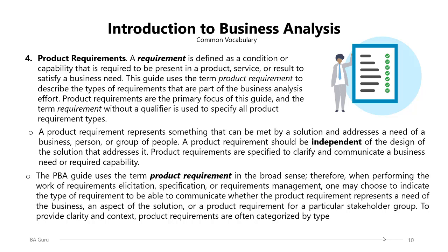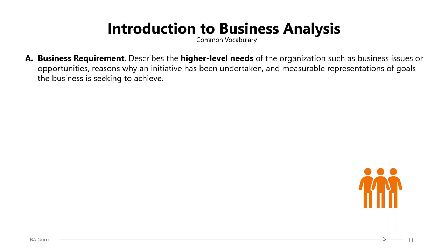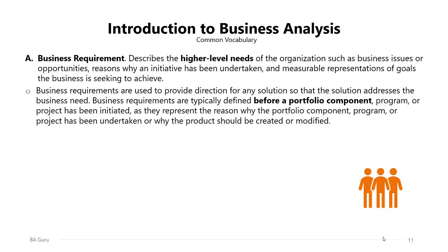The first type is the business requirement, which describes the higher-level needs of the organization such as business issues or opportunities, reasons why an initiative has been undertaken, and measurable representations of goals the business is seeking to achieve. Business requirements are used to provide direction for any solution so that the solution addresses the business need. They are typically defined before a portfolio component, program, or project has been initiated.